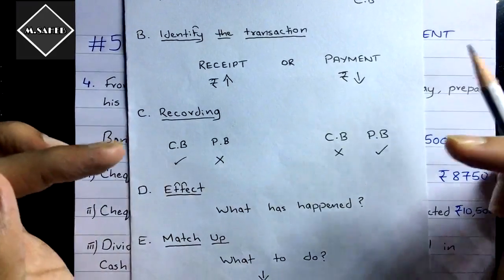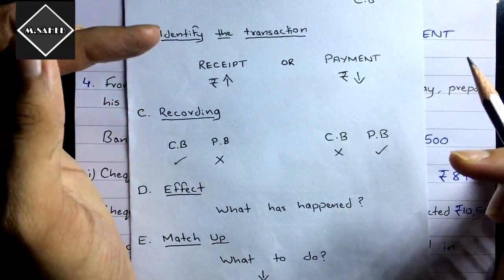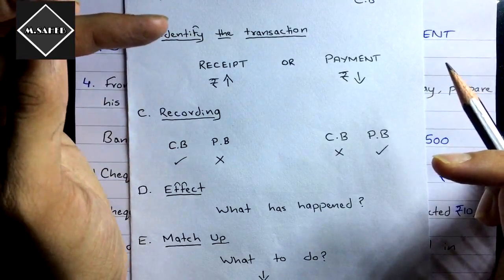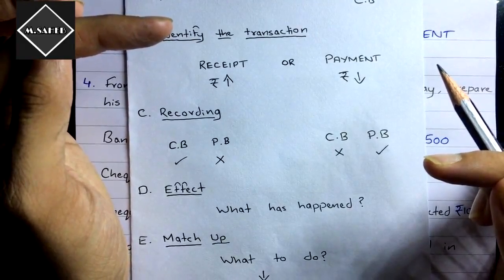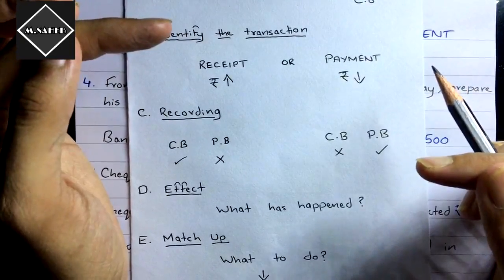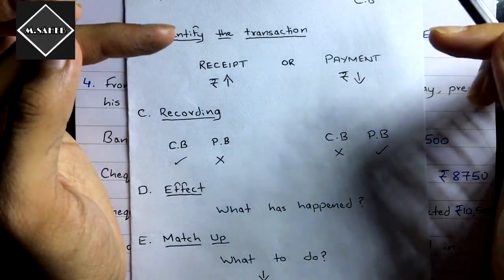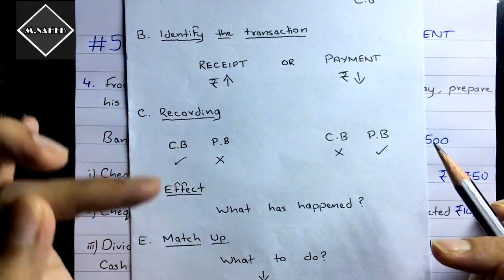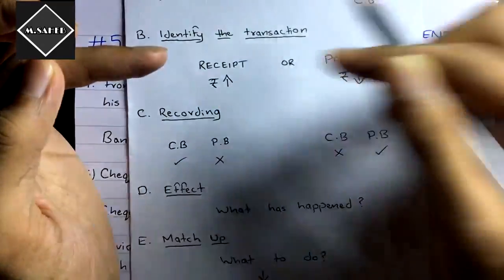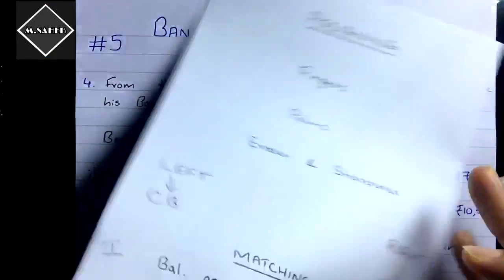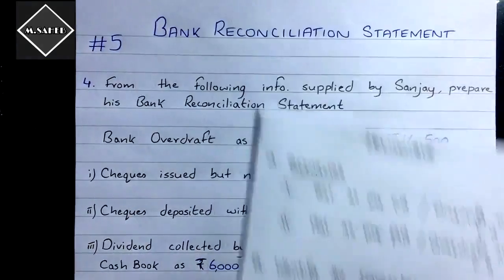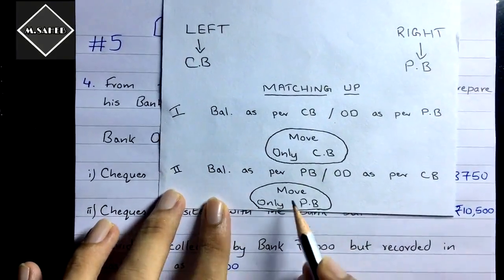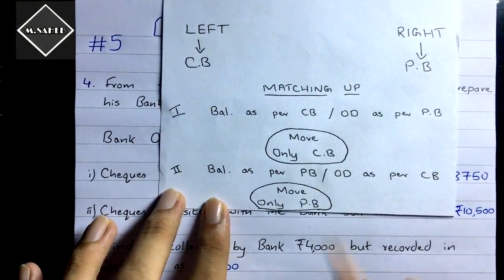For example, if a receipt is recorded in the cashbook but not in the passbook, the cashbook balance will increase. There is a difference between the cashbook and the passbook, so you need to match them up. If it is the first scenario, you move the cashbook finger to do the matchup. If it is the second scenario, you move the passbook finger. In the first scenario you move only the cashbook finger, and in the second scenario only the passbook finger.